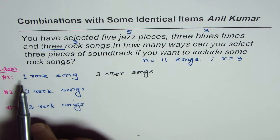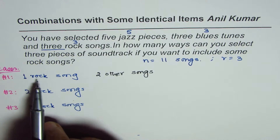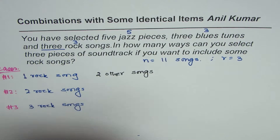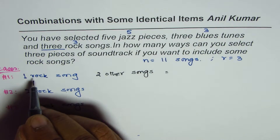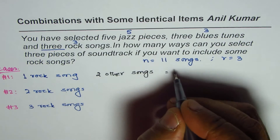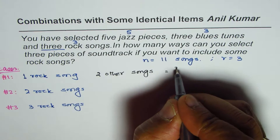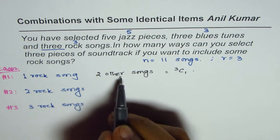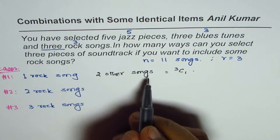Selecting one rock song means selecting one out of three. So we have 3C1 times two other songs. That means we can only combine from the five jazz and three blues — we are not selecting anything from the rock songs.